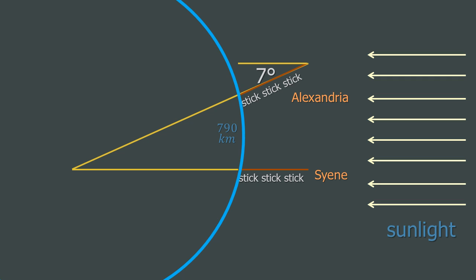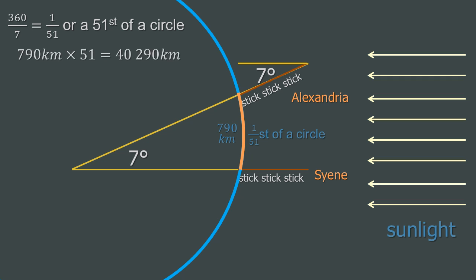Using alternate angles, he found that the angle between Alexandria and Syene would also be 7 degrees. So 360 divided by 7, which is the angle between Alexandria and Syene, gives us a 51st of a circle. So the 790 km is a 51st of all the way around the earth, which is the circumference. So 790 times 51 gives us the length around the whole circle, the circumference, which came out as 40,290 km.